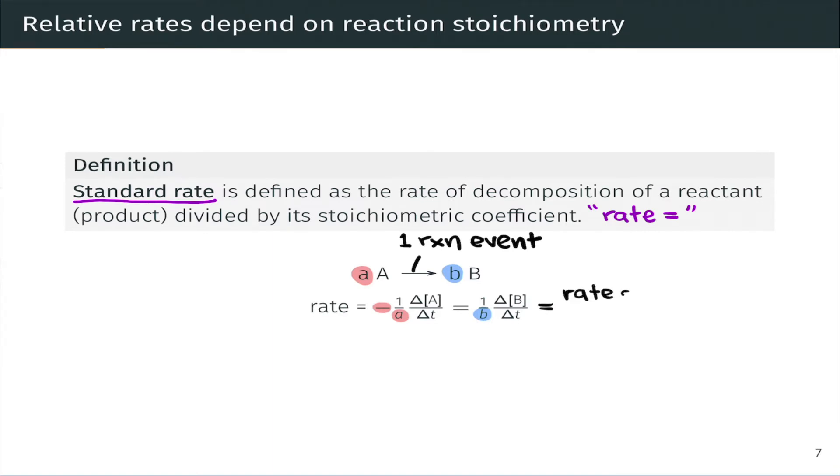And this is the standard rate. The standard rate is the rate of reaction occurrences with respect to time. Now, a couple of important points about the standard rate. It is positive by convention. That's why we see a negative sign out front of the reactant expression. And its units are concentration per time. The stoichiometric coefficient is dimensionless. It's just a number in the balanced chemical equation. So the units are driven by delta A divided by delta t or delta B divided by delta t.